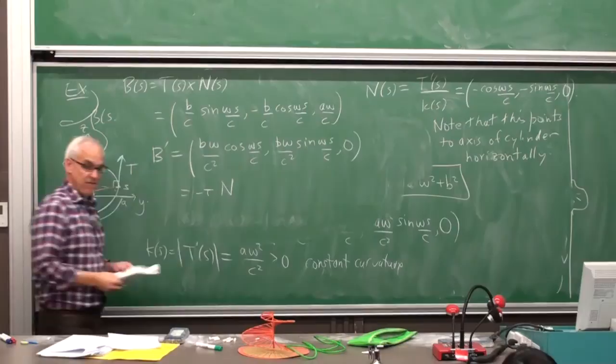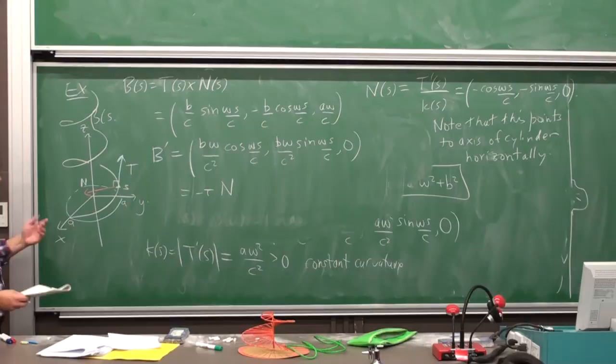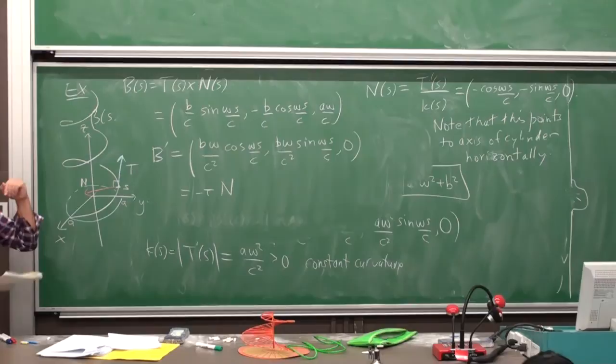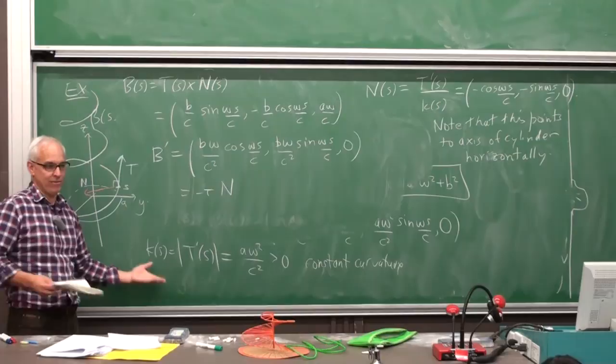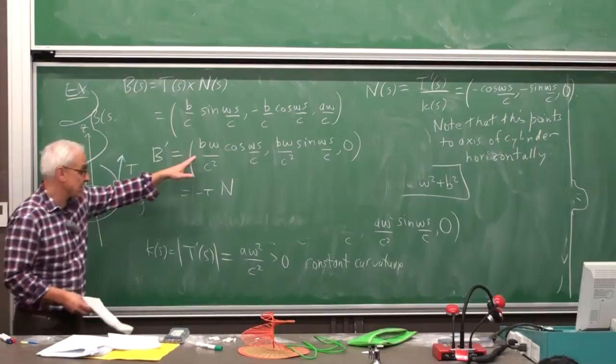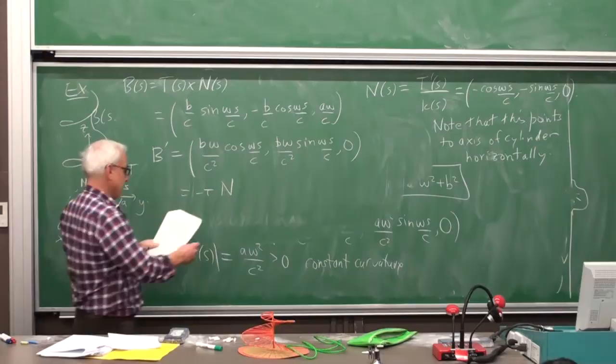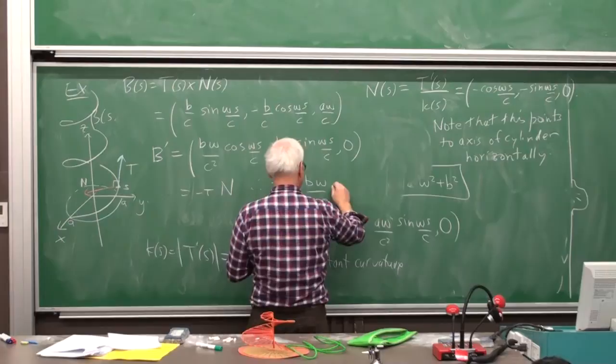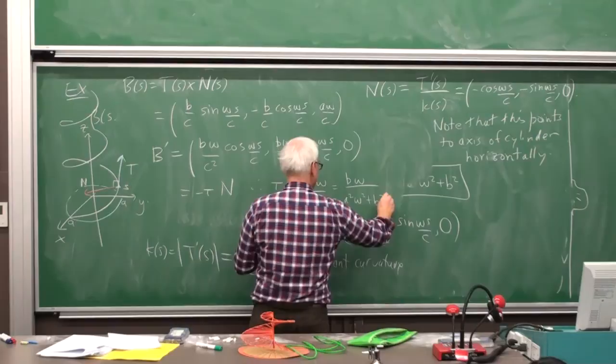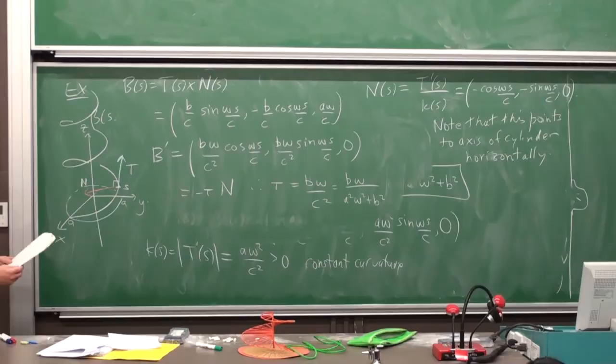And if we take the derivative of this, we get BW over C squared times cosine WS over C, BW over C squared times sine WS over C and 0. And that is minus tau times N. Remember, that's how we defined the torsion. Took the derivative of the binormal, and that was a multiple of the normal. And that multiple we called minus the torsion. The minus sign is there for historical reasons. It also makes the matrix sort of look pretty. You can sort of remember it a little bit easier. K minus K, tau minus tau. Okay, and so we can write down, if we compare this expression with the normal expression, then we can see that, therefore, tau equals BW over C squared. And C squared was this thing here. So this is BW over A squared W squared plus B squared. So it actually has a constant torsion as well.